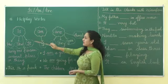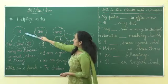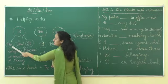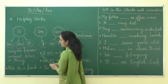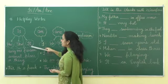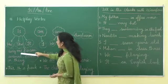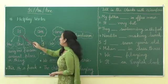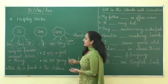Is, am, are are helping verbs. First is 'is'. We can use 'is' with singular nouns and singular pronouns like he, she, it. 'He' is for one boy, 'she' is for one girl, and 'it' is for one animal or anything. For any one person, animal, place or thing, we can use 'is'.